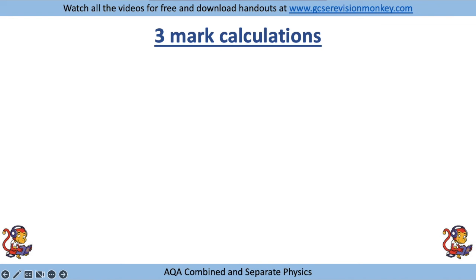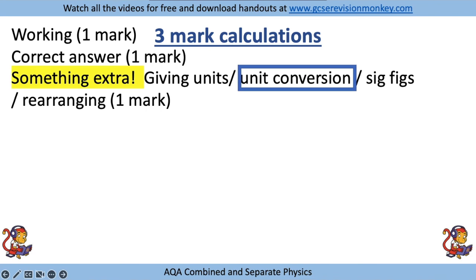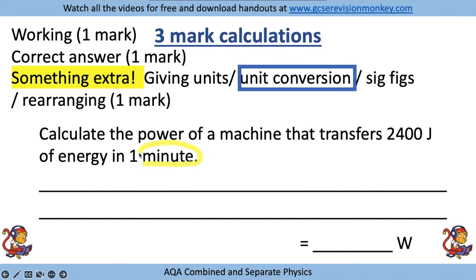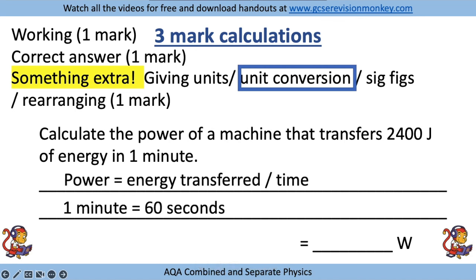Another three-mark calculation could involve converting units. A simple one is converting minutes to seconds. For example: calculate the power of a machine that transfers 2400 joules of energy in one minute. You must convert that to seconds. Write down the equation, show your conversion - one minute equals 60 seconds - put your numbers in, so it's 2400 divided by 60, then show your answer.